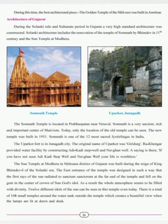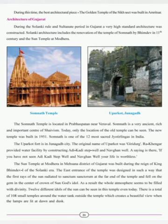Somnath is one of the 12 most sacred Jyotirlinga in India. Sultan Mahmud of Ghazni invaded Somnath temple and looted it in 1026 AD. As explained in Chapter 1, he invaded India several times seeing the abundant wealth here. Today, the new temple stands in the place of the old. Somnath temple is an important center of power, devotion and culture of India.